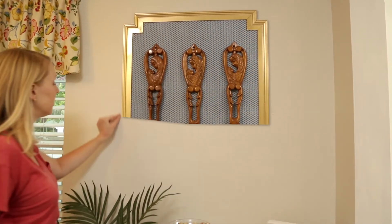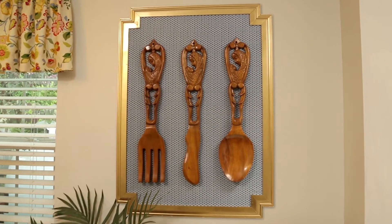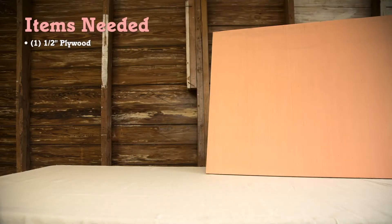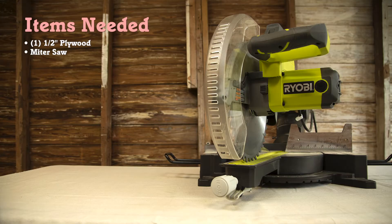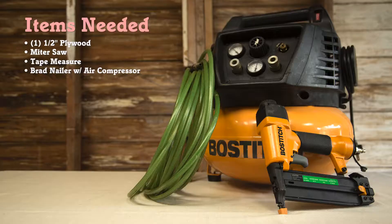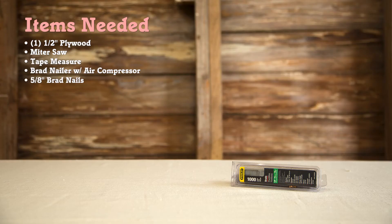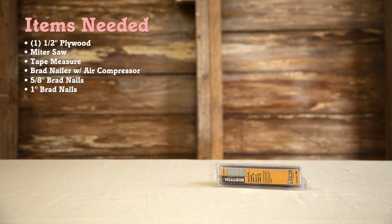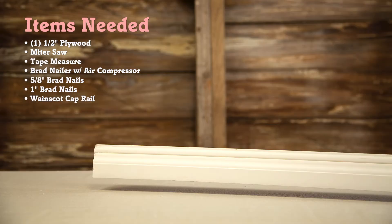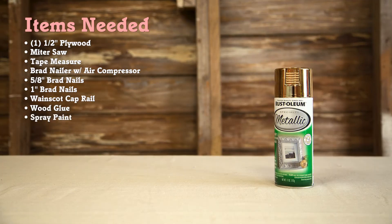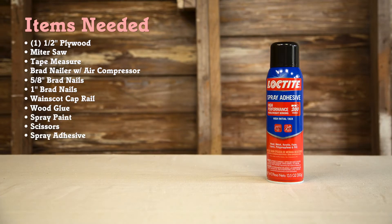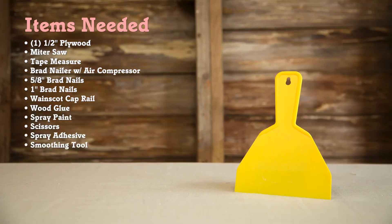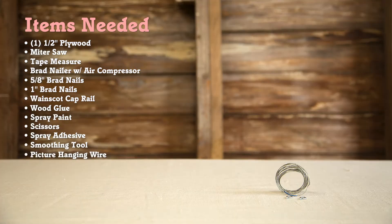Here are the tools and materials needed for this project: a pre-cut sheet of half-inch plywood, a miter saw, a tape measure, a brad nailer with air compressor, 5/8 inch brad nails, 1 inch brad nails, Wayne Scott cap rail, wood glue, spray paint, scissors, spray adhesive, a smoothing tool like this plastic drywall knife, picture hanging wire, and fabric.